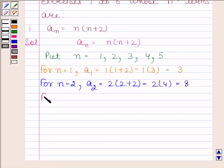For n = 3, a₃ = 3(3+2) = 3(5) = 15. For n = 4,